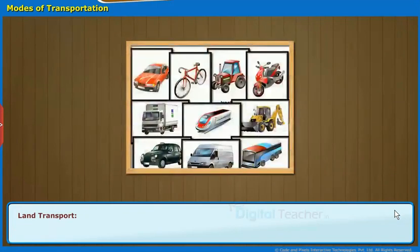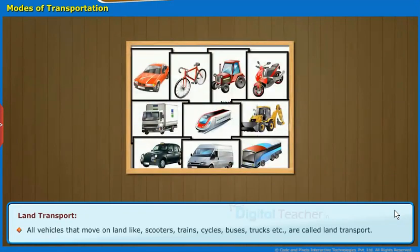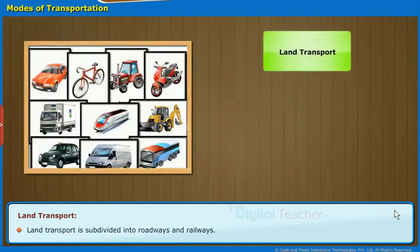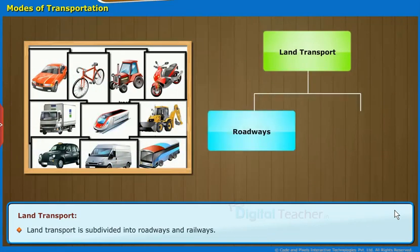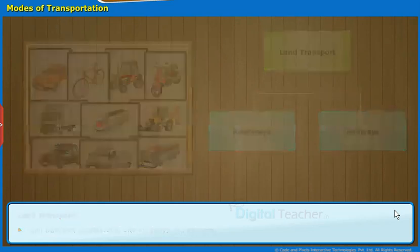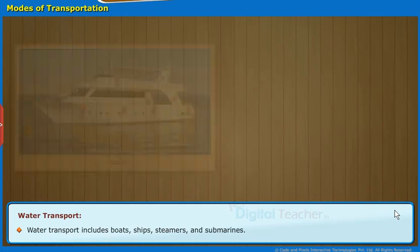Land Transport: All vehicles that move on land, like scooters, trains, cycles, buses, trucks, etc. are called Land Transport. Land Transport is subdivided into roadways and railways.